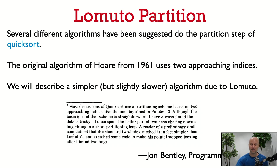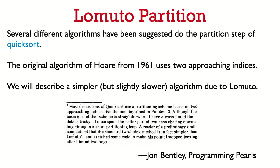John Bentley wrote several papers about the performance of quicksort and also worked on a C library implementation. In one of his Programming Pearls columns he says: 'Most discussions of quicksort use a partitioning scheme based on two approaching indices — like the Hoare approach. Although the basic idea is straightforward, I've always found the details tricky. I once spent the better part of two days chasing down a bug hiding in a short partitioning loop. A reader sketched code to make his point that the standard two-index method is simpler — I stopped looking after I found two bugs.' This speaks to the subtleness of the Hoare-type partition algorithm.